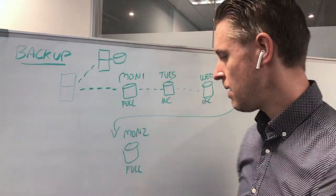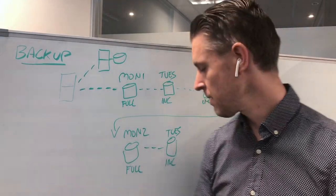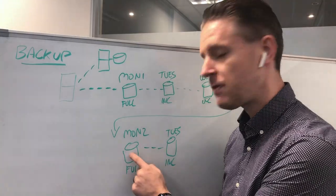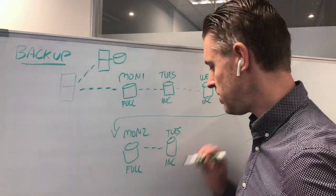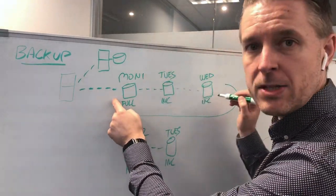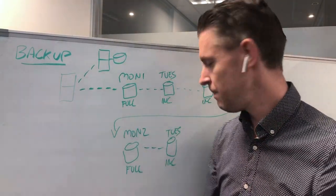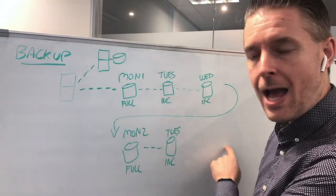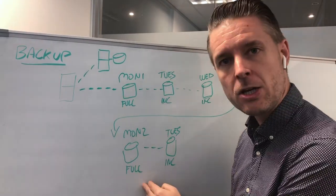Now, when the next full backup is performed, the subsequent incremental will only reference changes from that new full backup. The previous full from Monday becomes irrelevant to this new backup — it will not reference the old full or any of the incrementals from last week, because this new full has essentially started the counter again.